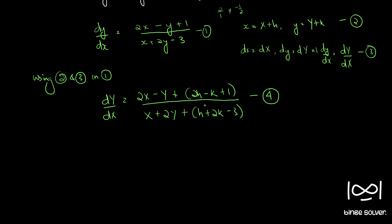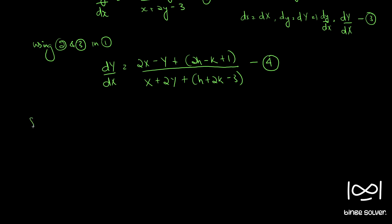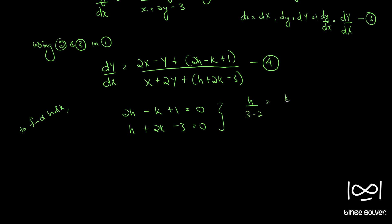Equation 4 is still non-homogeneous. If we find h and k such that 2h minus k plus 1 equals 0 and h plus 2k minus 3 equals 0, then equation 4 reduces to a homogeneous equation. Solving these two equations using cross-multiplication gives h equal to 1 by 5 and k equal to 7 by 5. Call this equation 5.